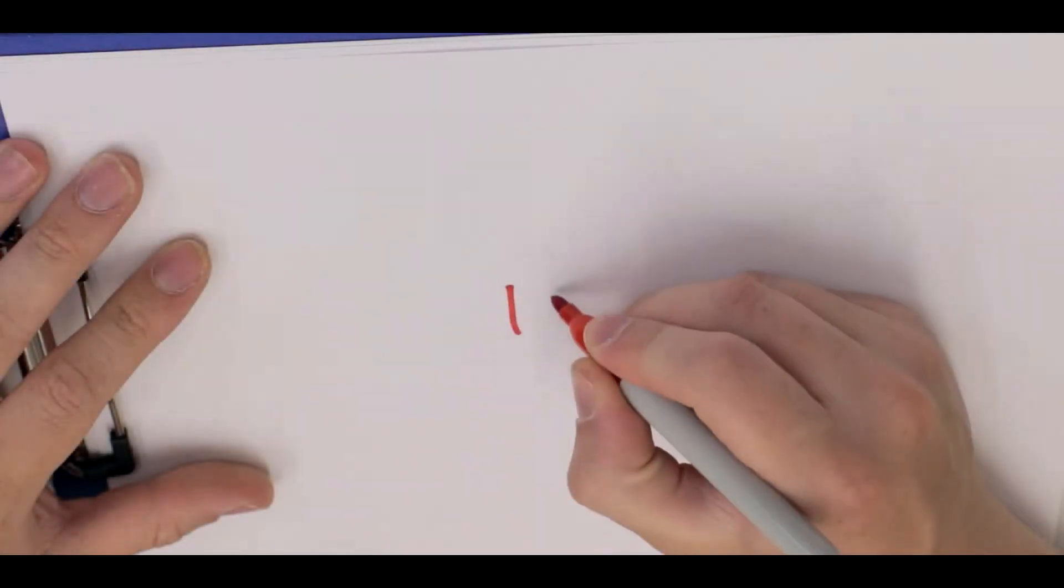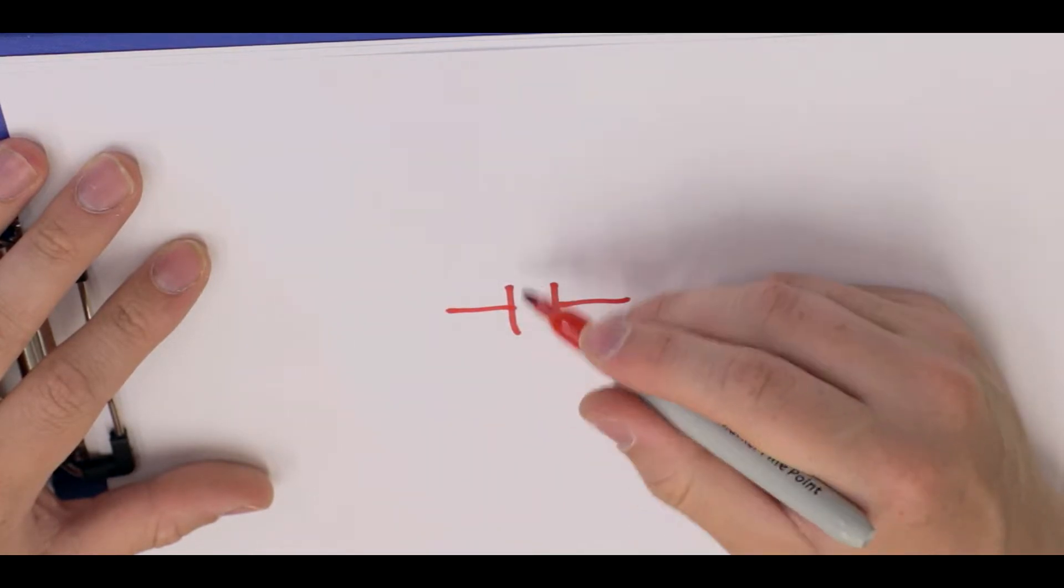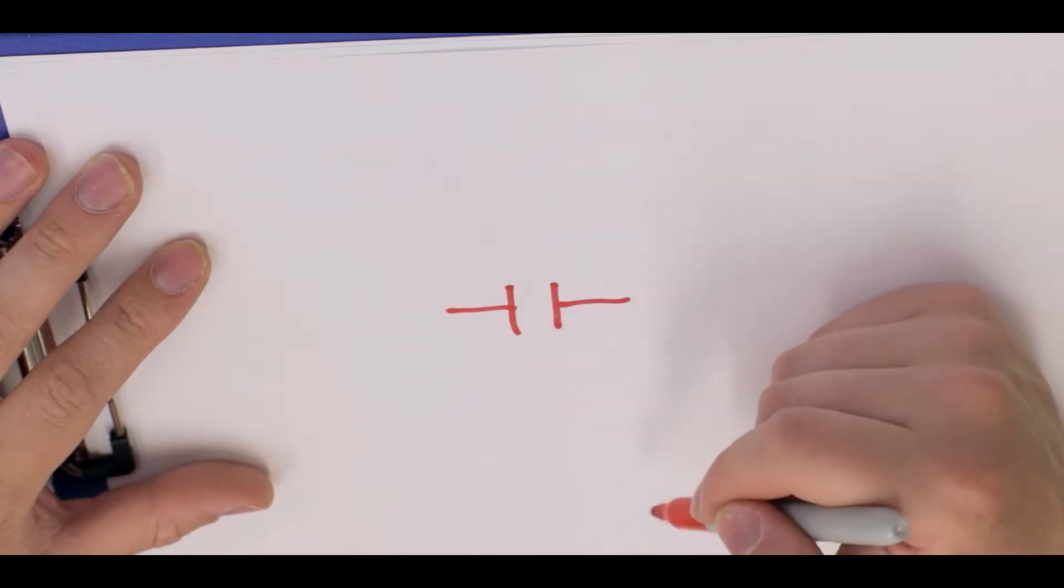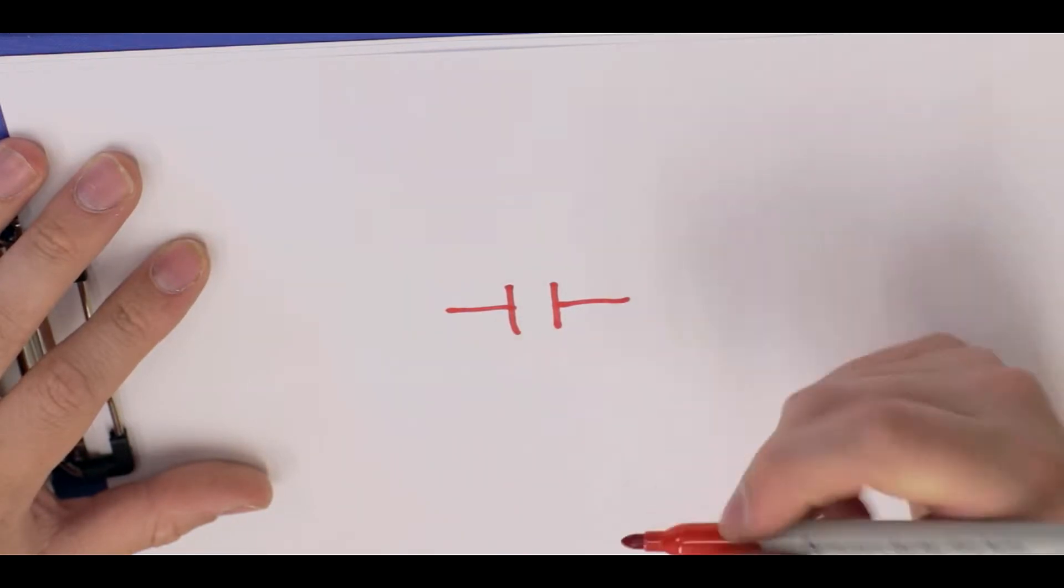So if we go ahead and draw a capacitor in its most basic form, we have two plates like that and a dielectric in the middle. Sometimes it's an air gap, it can be filled with an inert material, sometimes it can be an electrolyte, you get some pretty cool different designs. But this is a capacitor.